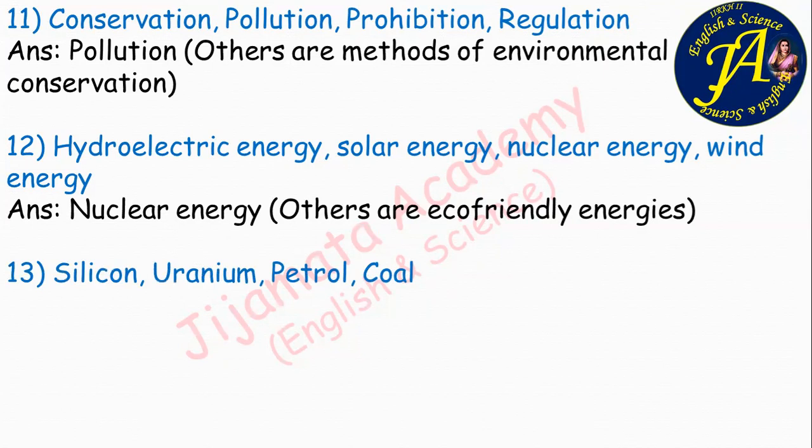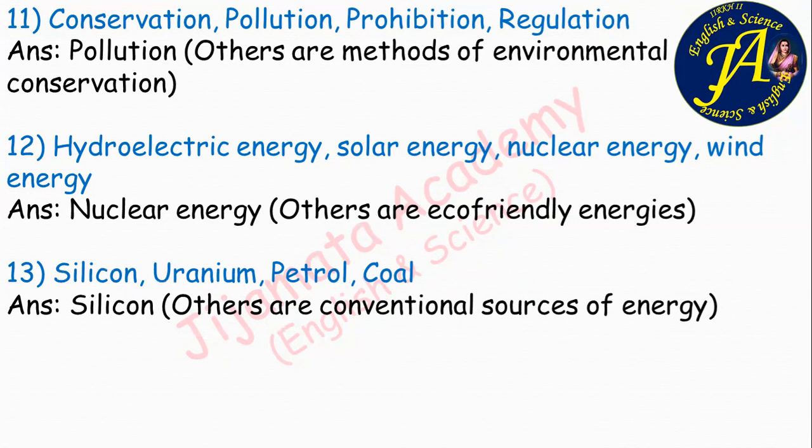Silicon, uranium, petrol, coal. The correct answer is silicon, because silicon is used in solar photovoltaic cells, while uranium, petrol, and coal are used in conventional sources of energy. Therefore, silicon is the correct odd one.